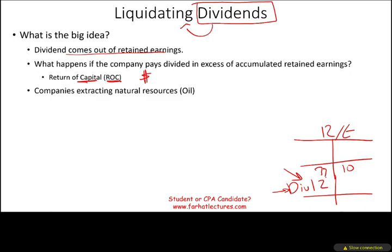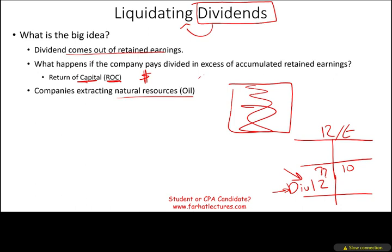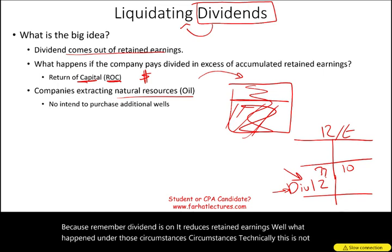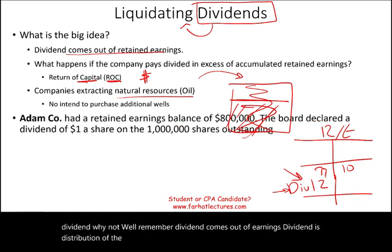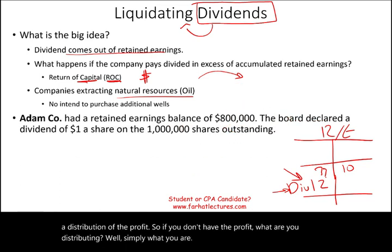What companies experience liquidating dividends? Companies that extract natural resources — for example, an oil company extracting oil from the ground. The company is created for the sole purpose of extracting oil, selling it, making a profit, and distributing that profit to shareholders. At some point, after they have extracted the majority of the oil, they'll start to close down the company and give all the money back to the shareholders. Some of that money may not be profit; if it's not profit, it's part of the original capital of the owners.